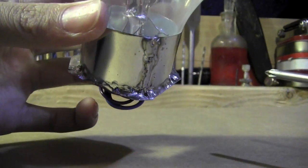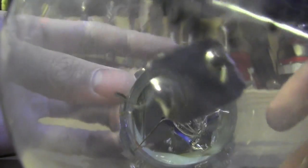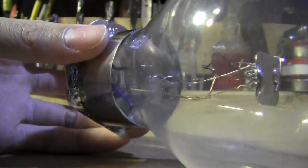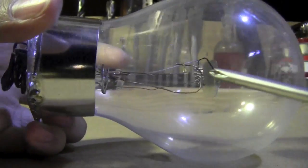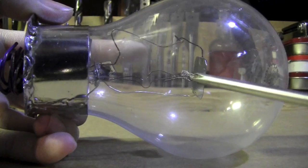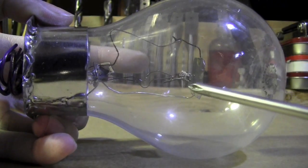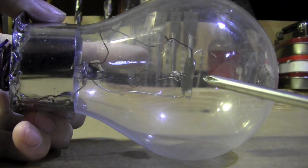I forget, but I think the filament is the cathode and the little piece of metal is the anode. I'm not sure. It might be switched the other way around, I don't remember.